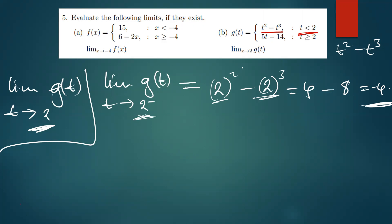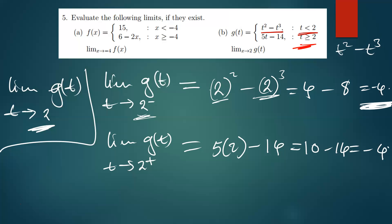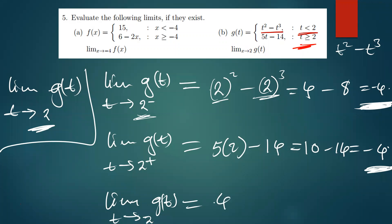Now for the right side: the limit of g(t) as t approaches 2 from the right. We plug t = 2 into the expression for the right side, which is 5t minus 14. So we have 5 times 2 minus 14, which gives us 10 minus 14 equals negative 4. The right-side limit is also negative 4.